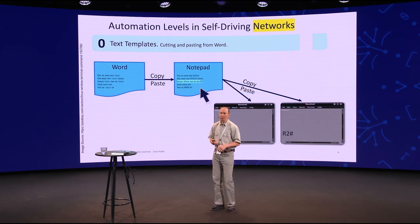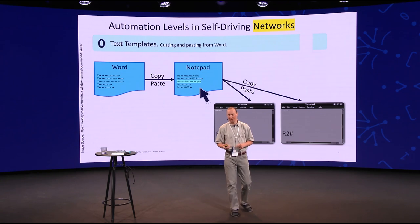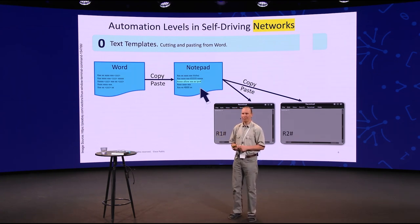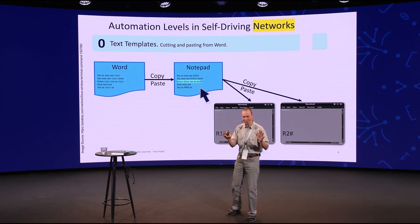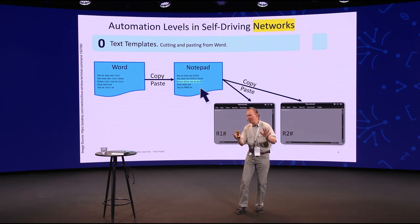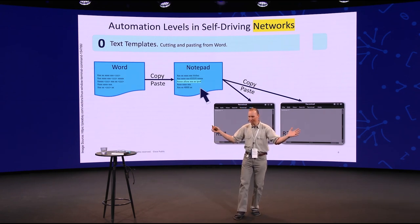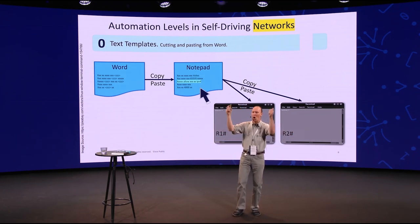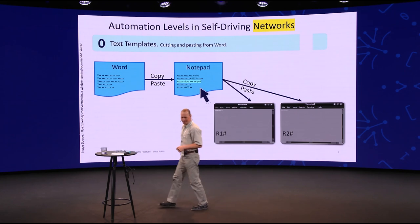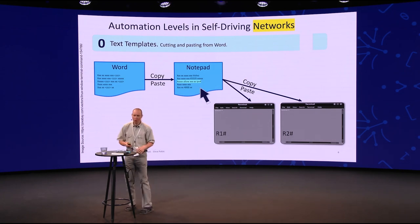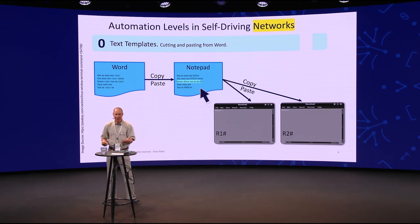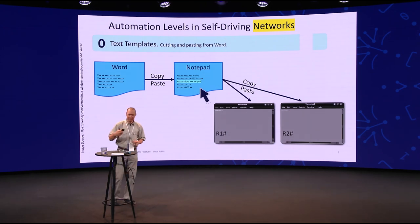And I thought we would do the same for network automation. I defined similarly levels zero through five for network automation — see if you can follow me in this discussion.